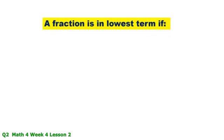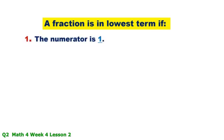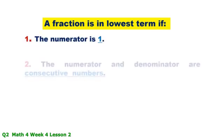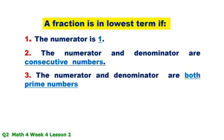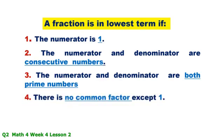A fraction is in lowest term if: Number 1 — the numerator is 1; Number 2 — the numerator and denominator are consecutive numbers; Number 3 — the numerator and denominator are both prime numbers; Number 4 — there is no common factor except 1.